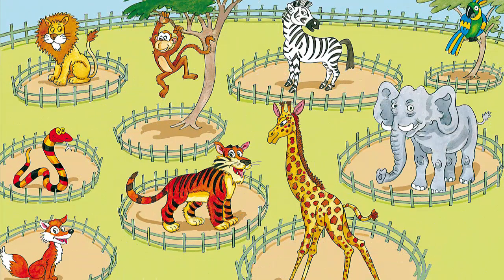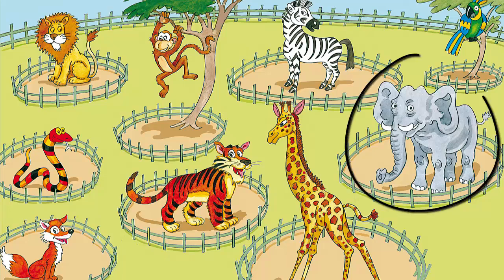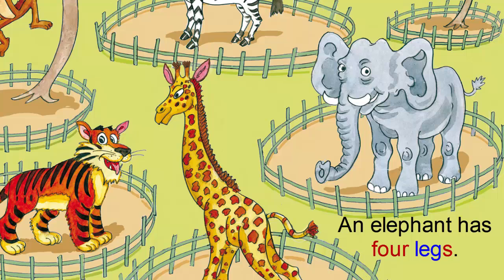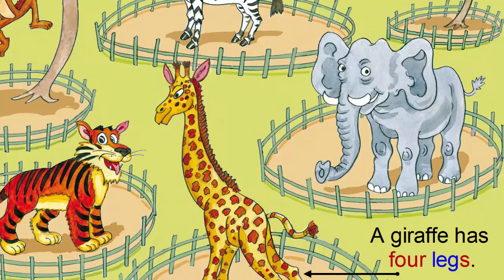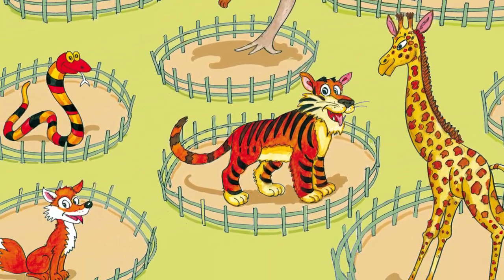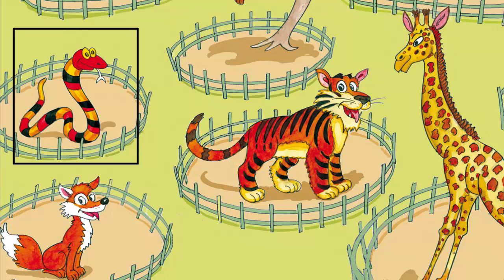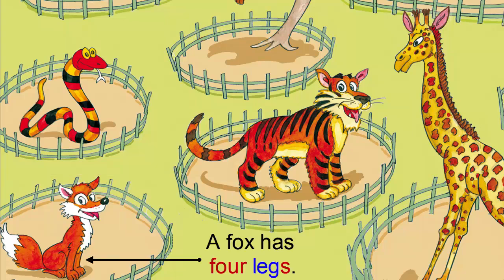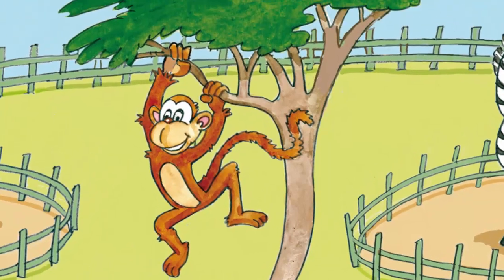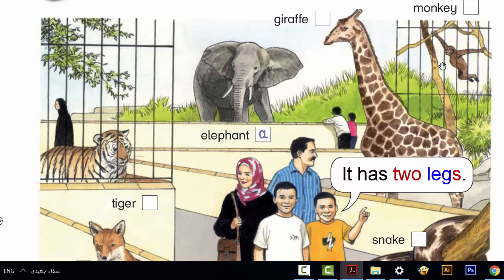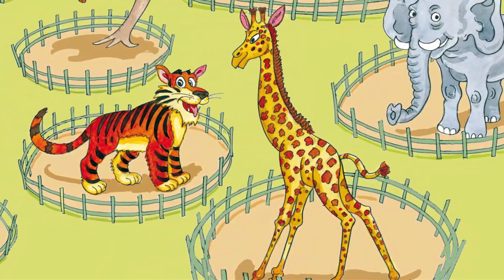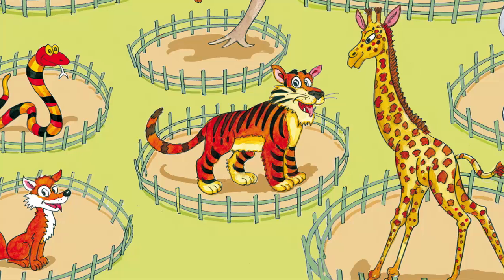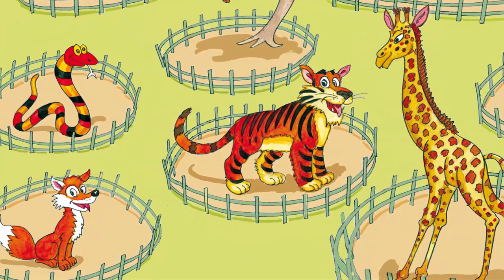Listen and say. An elephant has four legs. A giraffe has four legs. A tiger has four legs. A snake has no legs. A fox has four legs. A monkey has two legs. It has two legs — what is it? It has four legs — what is it? It has no legs — what is it?